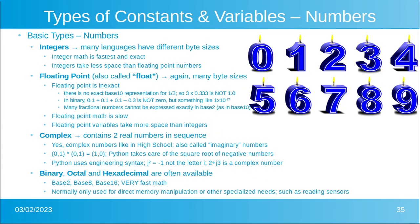The next type of constant and variable are numbers. You can have different types of numbers. First one is integers. Many different languages have many different byte sizes. In fact, you can have an integer in Python that has 150 digits — the actual limit is something like 256 digits. Integer math is fastest and it is exact. Integers take less space than floating point numbers. However, if you divide the integer five by the integer three, the answer is integer one, which may or may not be what you're looking for.